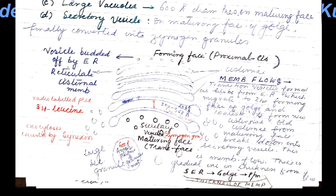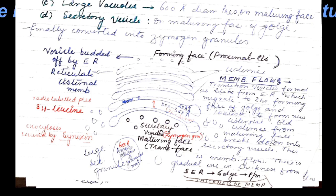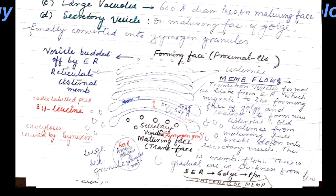At the concave face, also called the maturing face, secretory vesicles blab off. These vesicles may cause exocytosis or may get converted into lysosomes. As far as membrane thickness is concerned, it keeps on increasing from smooth ER to rough ER to Golgi to plasma membrane.